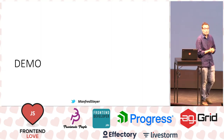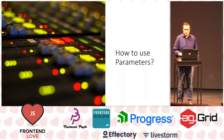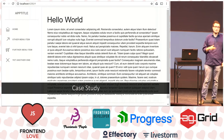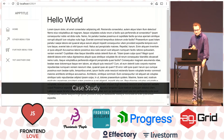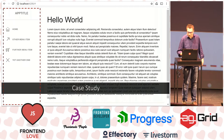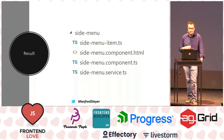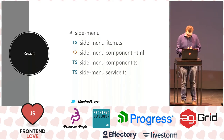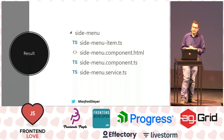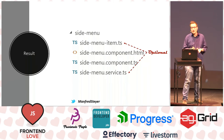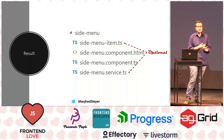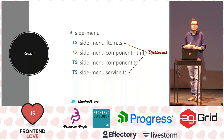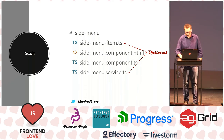After looking at the hello-world project, let's go one step further and speak about using parameters. I want to switch to a more exciting example — one I'm using to show many aspects of schematics. It's an example that scaffolds a side menu. The side menu consists of several files: a side menu item describing one menu item, an Angular component with an HTML file and a TypeScript file, and a service. Both the item and the service are optional — you can opt into them, otherwise you get hard-coded menu items within the HTML file.